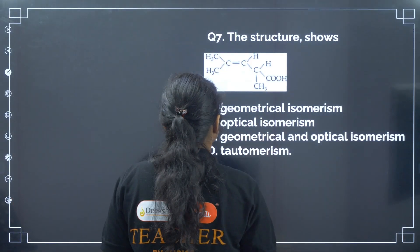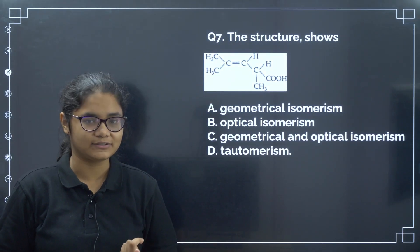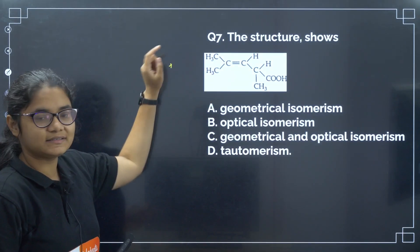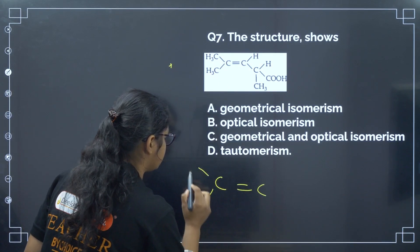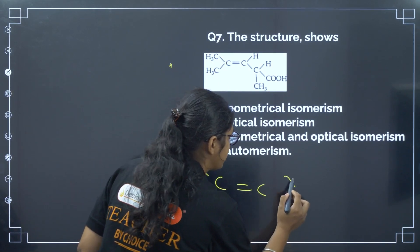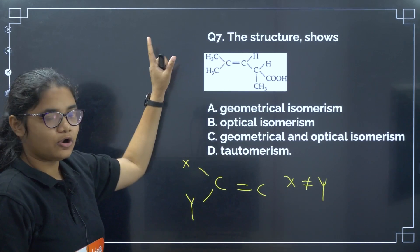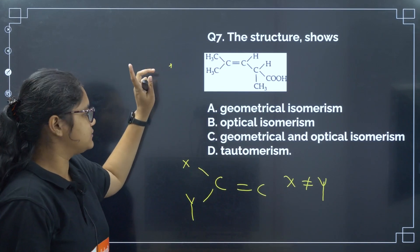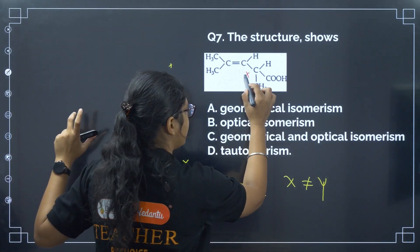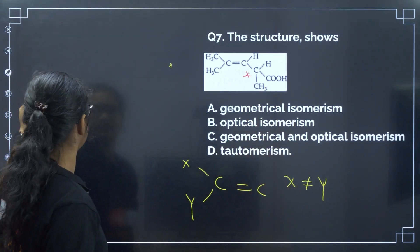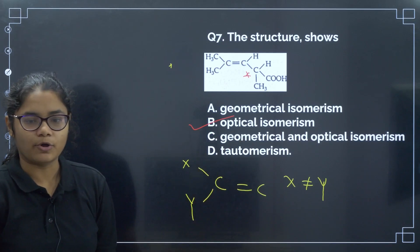Next: the structure shows — by seeing the double bond you may think it shows geometrical isomerism. But both groups attached are CH3. For geometrical isomerism, the condition is that X must not equal Y on the same carbon. So this will not show geometrical isomerism. However, the carbon present here is a chiral carbon, so it will show optical isomerism. Correct answer is optical isomerism, option number B.